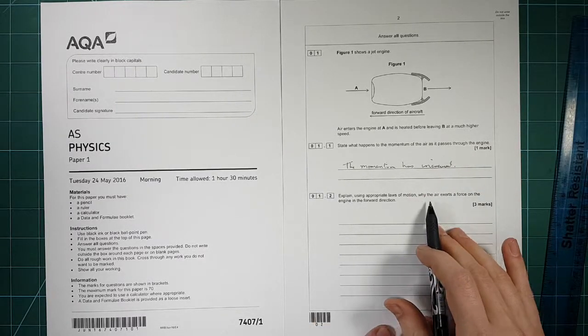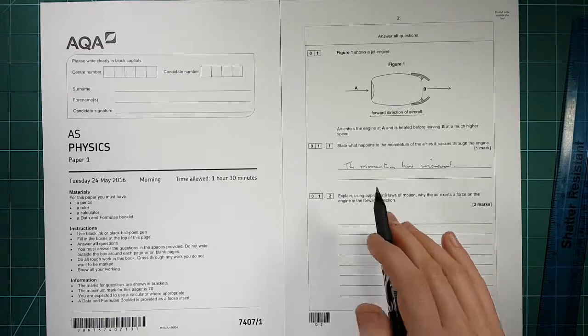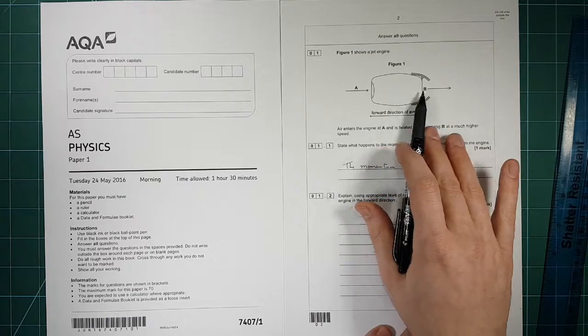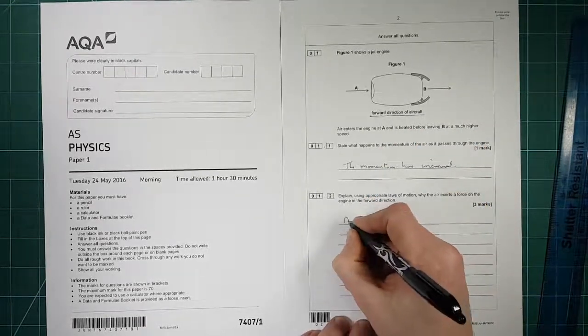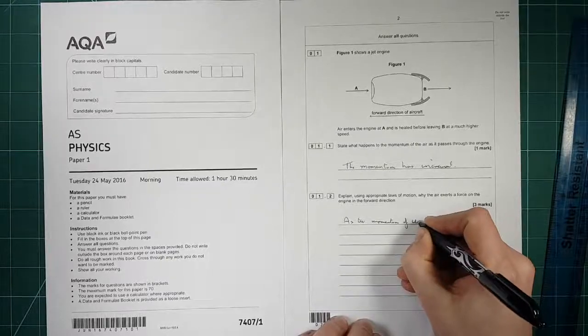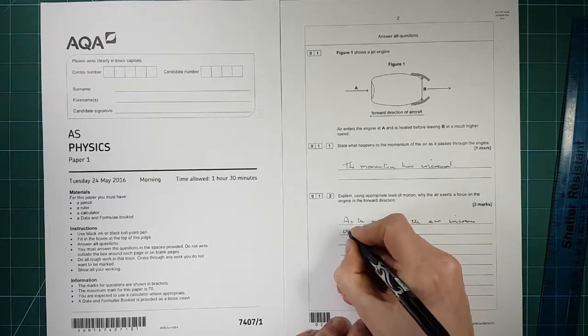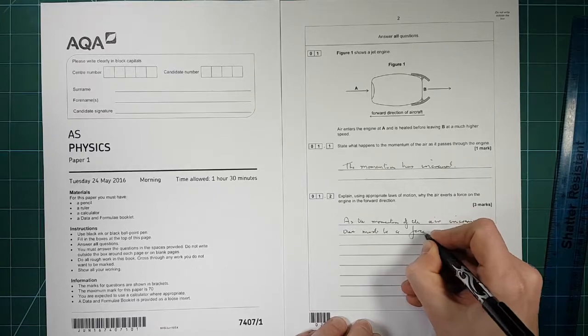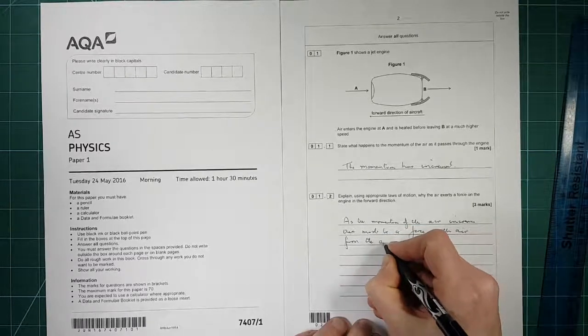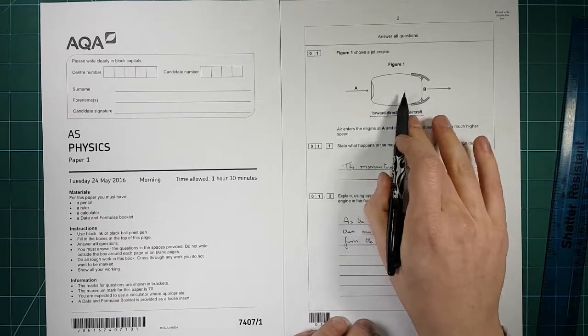Explain using an appropriate law of motion why the air exerts force on the engine in the forwards direction. So if the momentum increases then that means there's been a change of momentum. So that means there must have been a force on the air. So as the momentum of the air increases there must be a force on the air from the engine backwards. And that's Newton's second law.